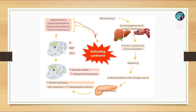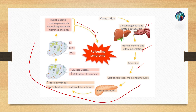This is a cycle of malnutrition involving gluconeogenesis and protein catabolism issues, affecting protein, minerals, and vitamins. The refeeding process then goes through this cycle.